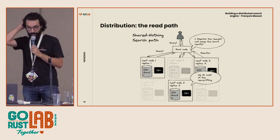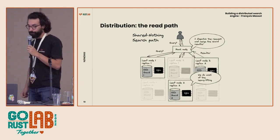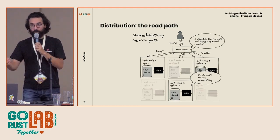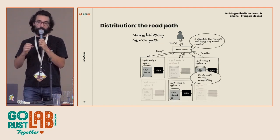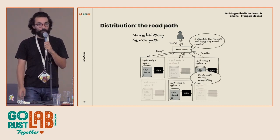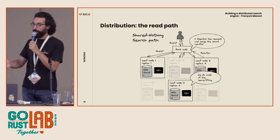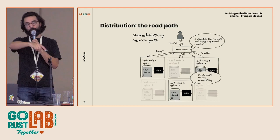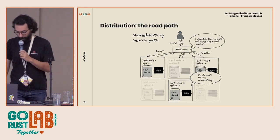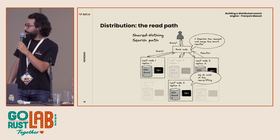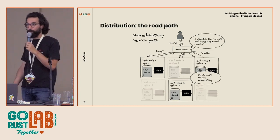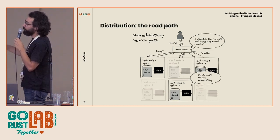When a search query comes in, a user makes a query, it gets processed by one node — the root node — which is responsible for distributing the workload across all shards. Each shard is a piece of index. The root node sends the query to each shard, each shard answers and returns the result. It's very fast because your data is next to the CPU.